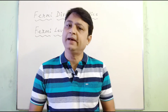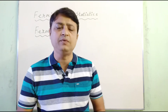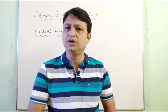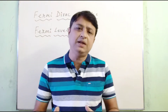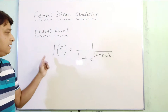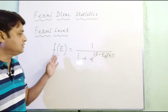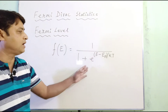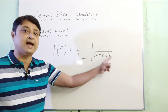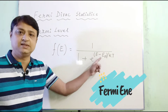Electrons in solids obey the Fermi-Dirac distribution, or Fermi-Dirac statistics. In this video, I will tell you about the Fermi-Dirac statistics as well as what the Fermi level is, and later I will also tell you about the application of the Fermi level in semiconductors. The Fermi-Dirac distribution function is given as f(E), also known as the probability of occupancy. The mathematical form is: f(E) = 1 / (1 + e^((E - Ef) / kT)), where k is the Boltzmann constant and T is the temperature on the absolute scale.